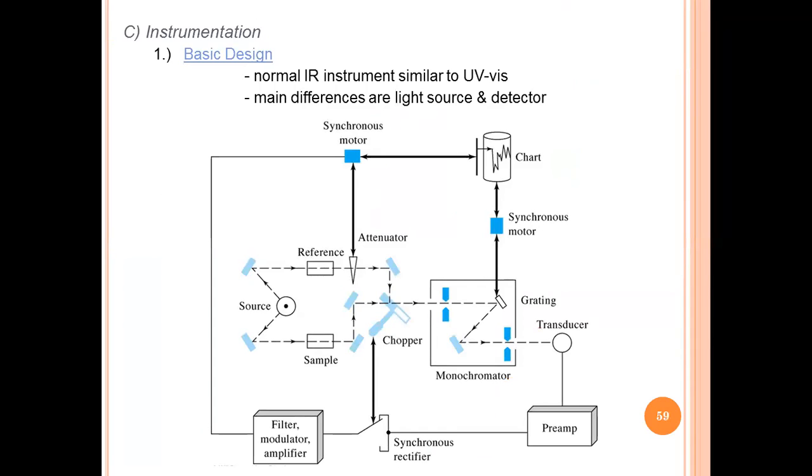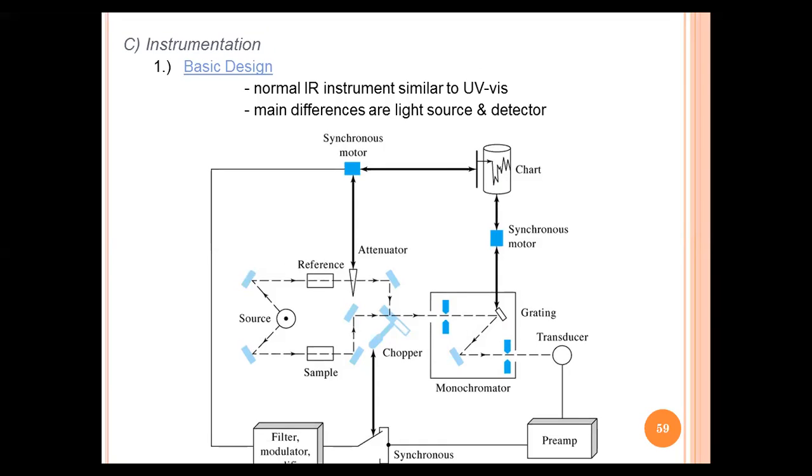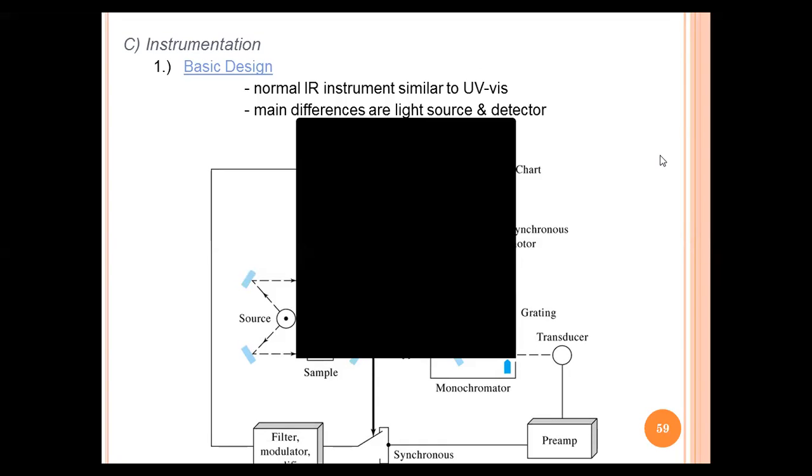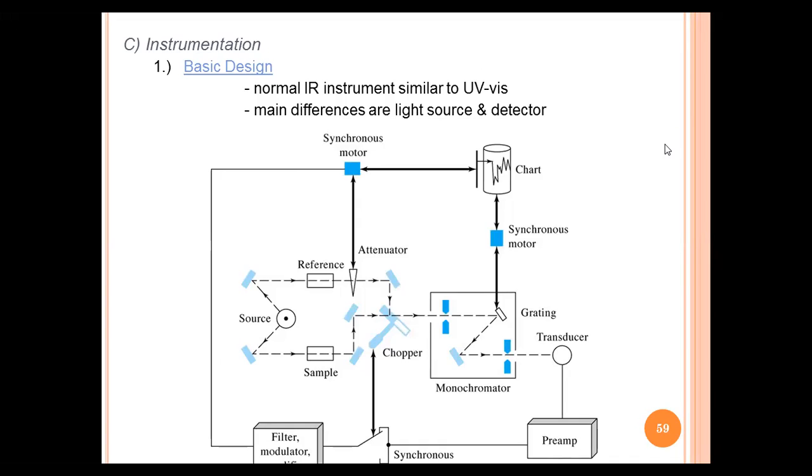The instrumentation basic design - the main differences are in light source as well as the detector. In normal IR instruments similar to UV-visible spectrophotometer, but in FTIR the main difference is light source and detector system.